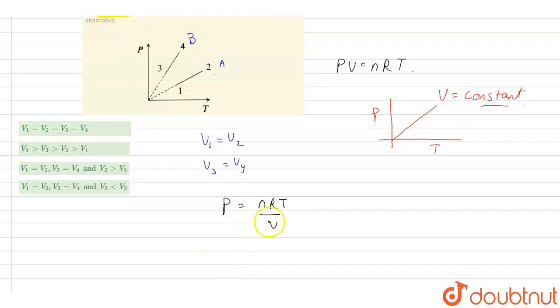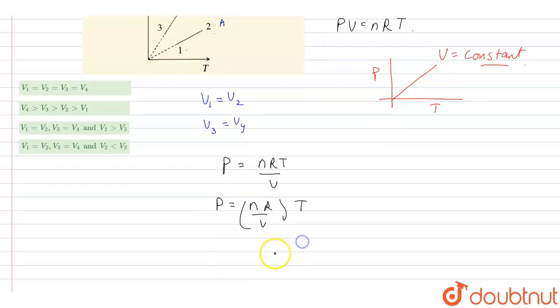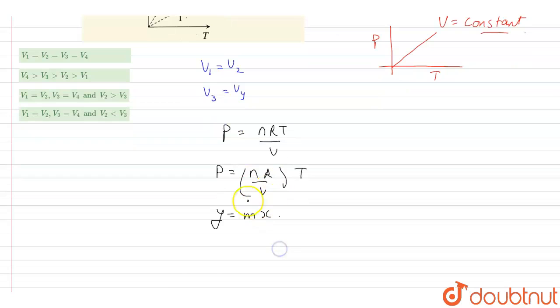So, therefore, P will be equal to nR by V into T, and if I compare this to the equation of straight line y equals mx, we will get m, that is slope of the line, equals nR upon V.